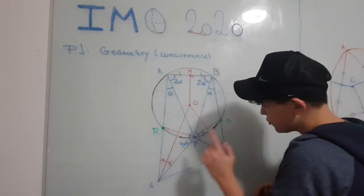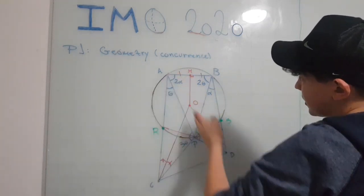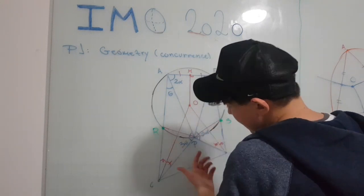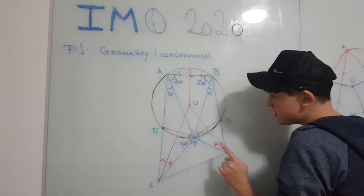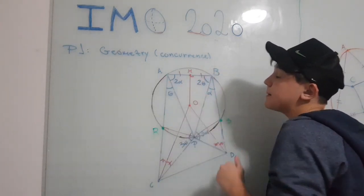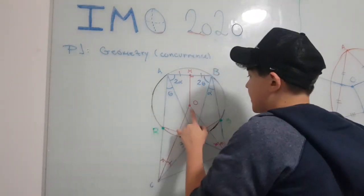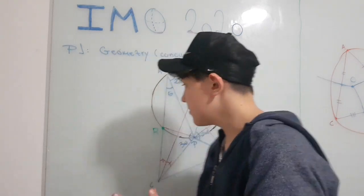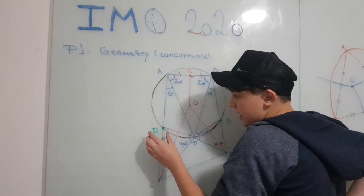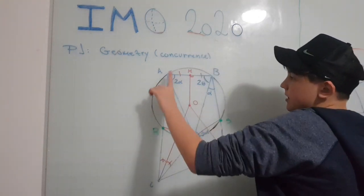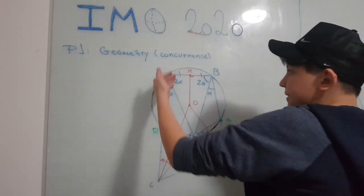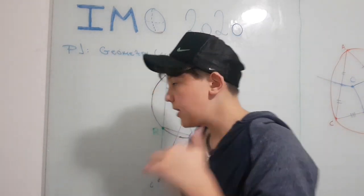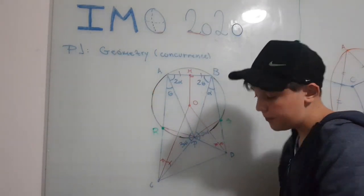To solve it, I draw the circumcircle of triangle APB. Our goal is to prove that the bisector of angle PCA, the bisector of angle PDB, and the perpendicular bisector of segment AB all concur at the same point, which I call O — the center of the circumcircle. I define point R as the intersection of the circumcircle of triangle APB with side AC, and point S as the intersection of the circumcircle with side BD.